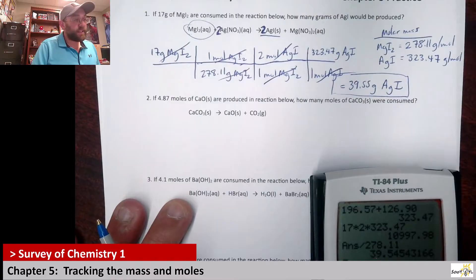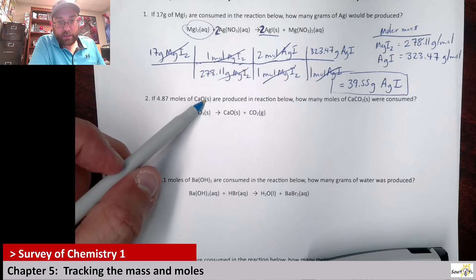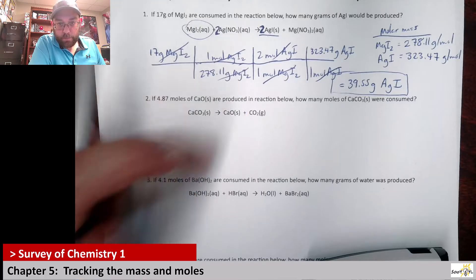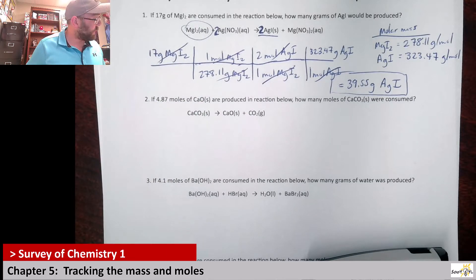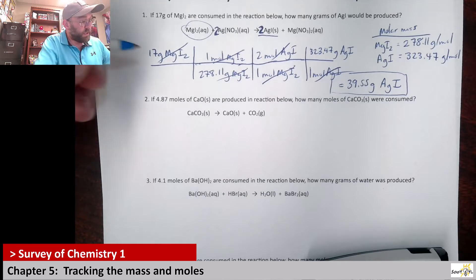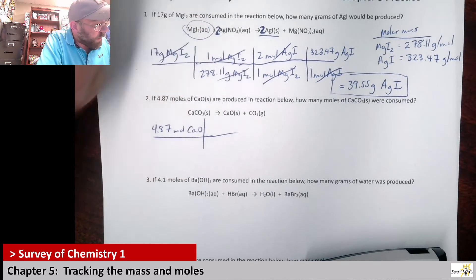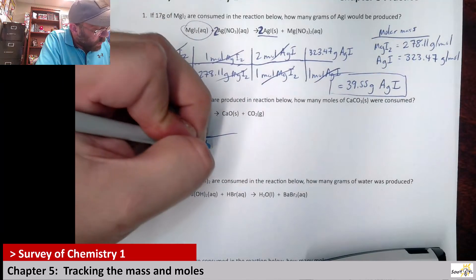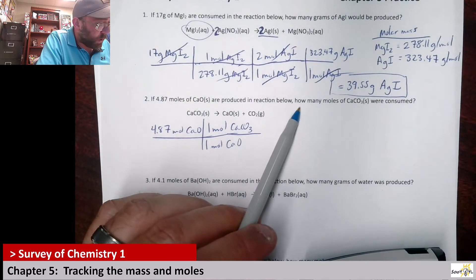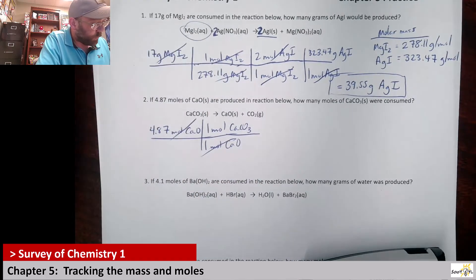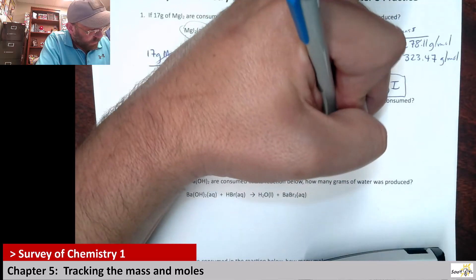Next, if you have 4.87 moles of calcium oxide produced in the reaction, how many moles of calcium carbonate were consumed? This reaction is balanced as written, so everything is a one-to-one mole ratio. Since 1 mole of calcium oxide is produced from 1 mole of calcium carbonate, the answer is simply 4.87 moles of calcium carbonate.